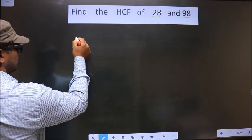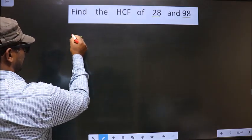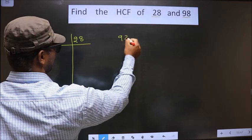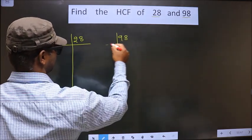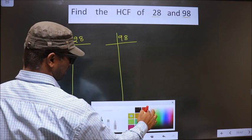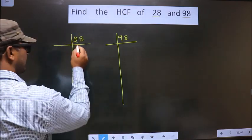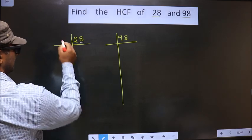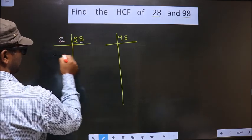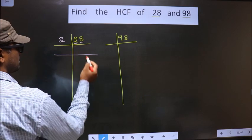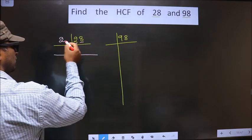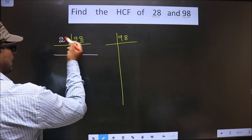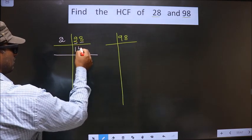That is 28, 98. Now, in this number, last digit is 8, which is even, so we take 2 here. First number is 2. When do we get 2 in 2 table? 2 once 2. Next number is 8. When do we get 8 in 2 table? 2 fours 8.